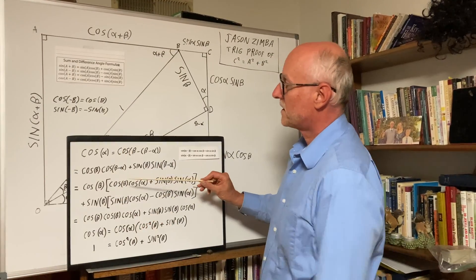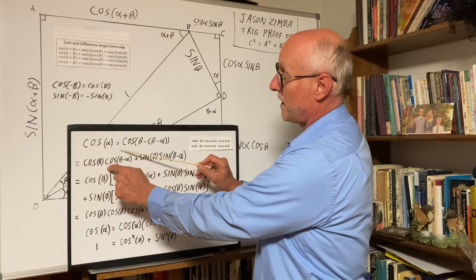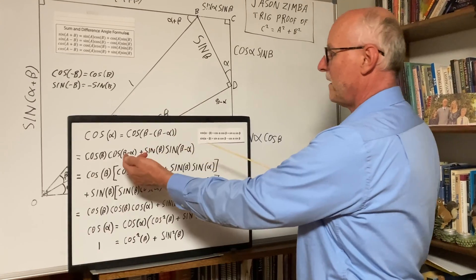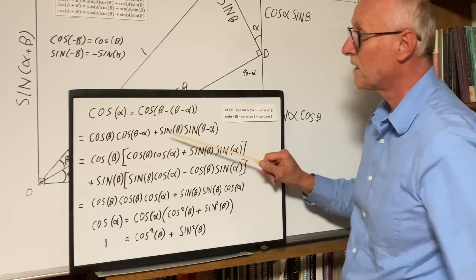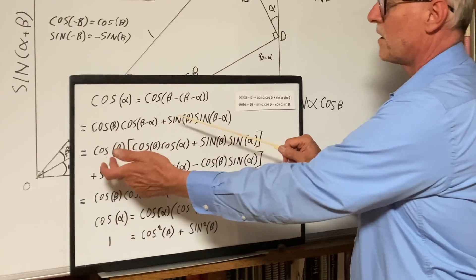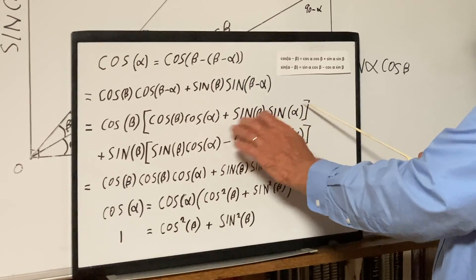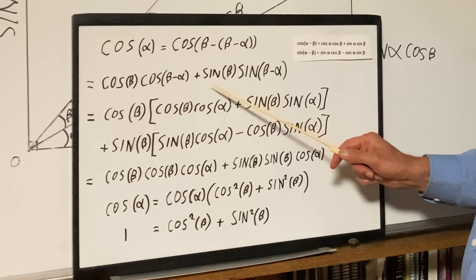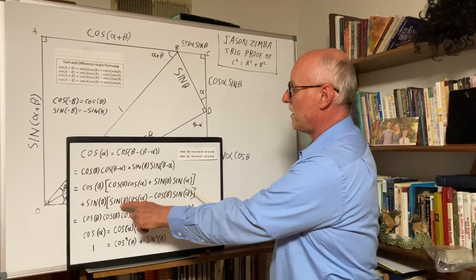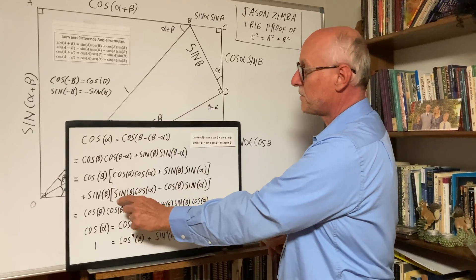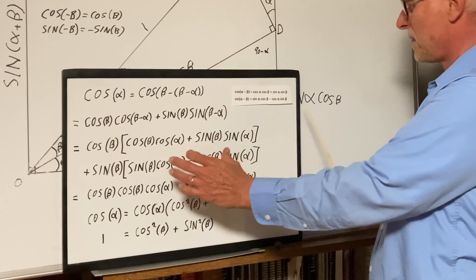Further expanding, we have the cosine beta part and the sine beta part, so now we have to expand cosine(beta minus alpha) and sine(beta minus alpha). Cosine beta times (cosine beta cosine alpha plus sine beta sine alpha) — that's our cosine difference angle formula. And likewise sine(beta minus alpha) expands to sine beta cosine alpha minus cosine beta sine alpha. Simple plug and play.